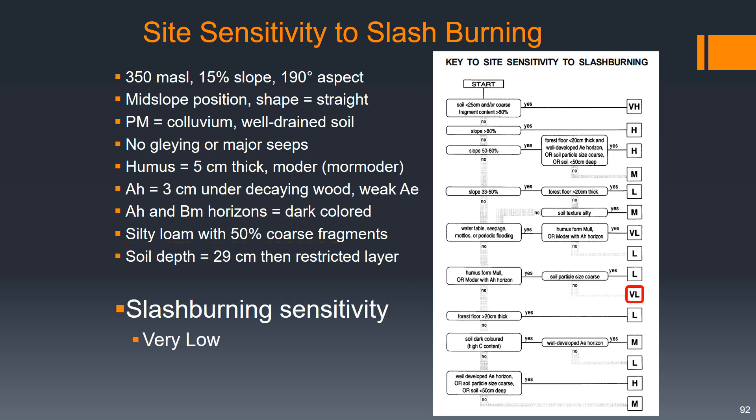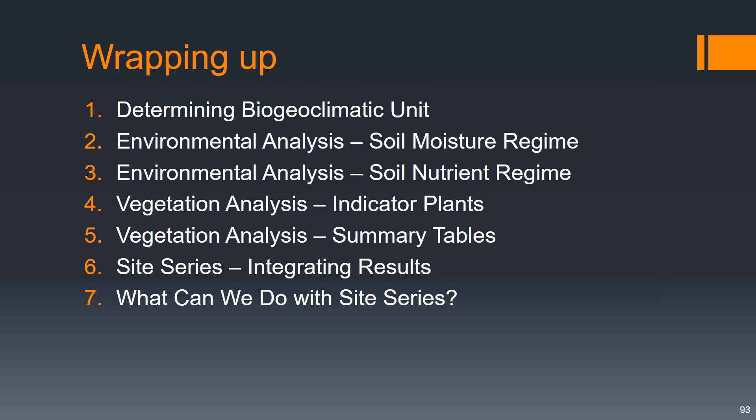To wrap things up, we went through quite a bit of material. We started by determining the biogeoclimatic unit by looking at maps and comparing the vegetation at our site to reference vegetation summary tables. We did environmental analysis to identify the soil moisture regime and soil nutrient regime. We did two approaches to vegetation analysis — first analyzing indicator plants, and second comparing our results to reference summary tables. We then integrated all of those site series classifications to arrive at our final classification, and lastly we looked at reference material to understand how we might manage a forest of that site series.